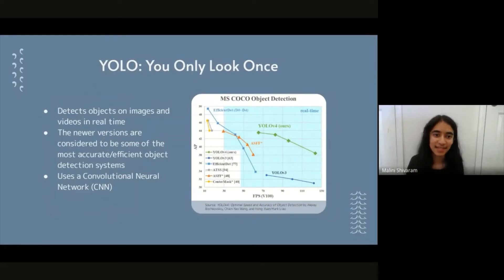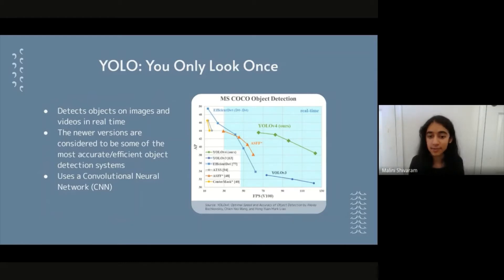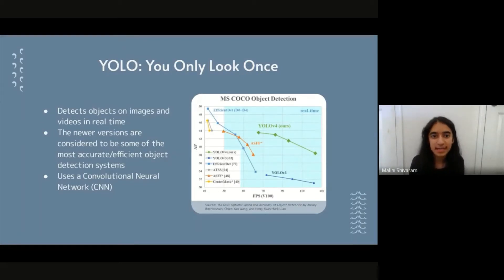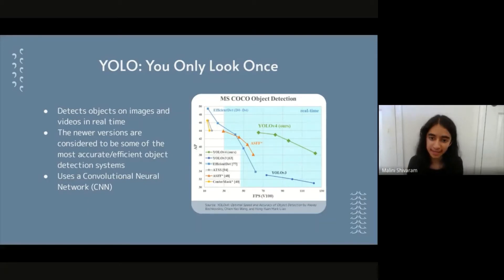The next tool I've used is YOLO — You Only Look Once — a real-time object detection system. When given an image or video in real time, it detects the objects we want. We chose YOLO because version 4, which is what we're using, is considered one of the most accurate and efficient object detection systems. The chart on the right compares different systems. The vertical axis is AP (average precision) — a performance measure — and the horizontal axis is FPS (frames per second). YOLO version 4 consistently does better than others at medium to high frame rates on the MSCOCO dataset.